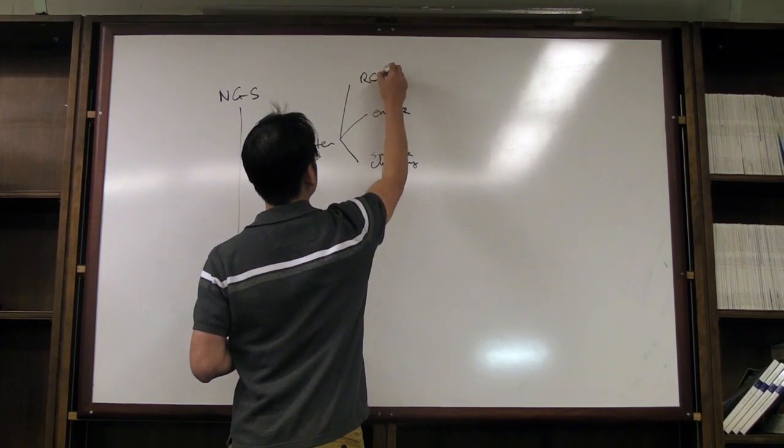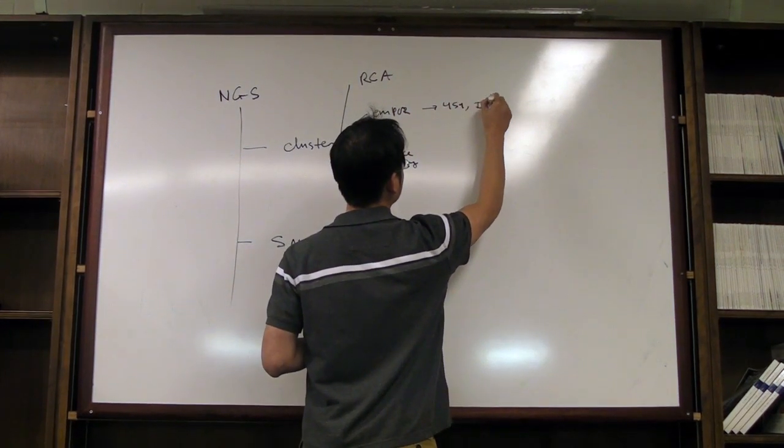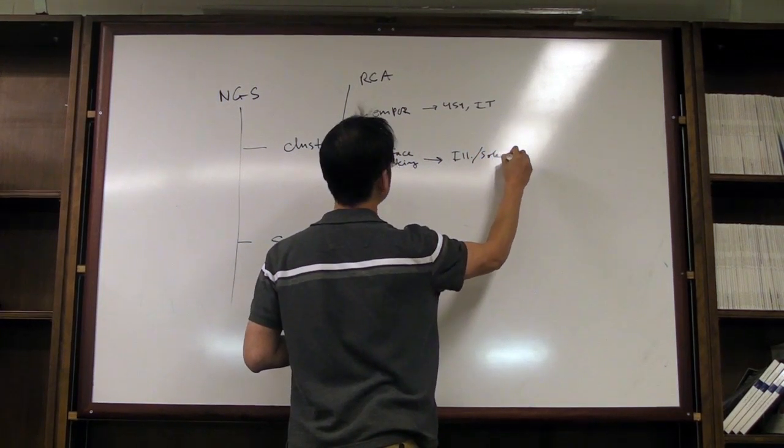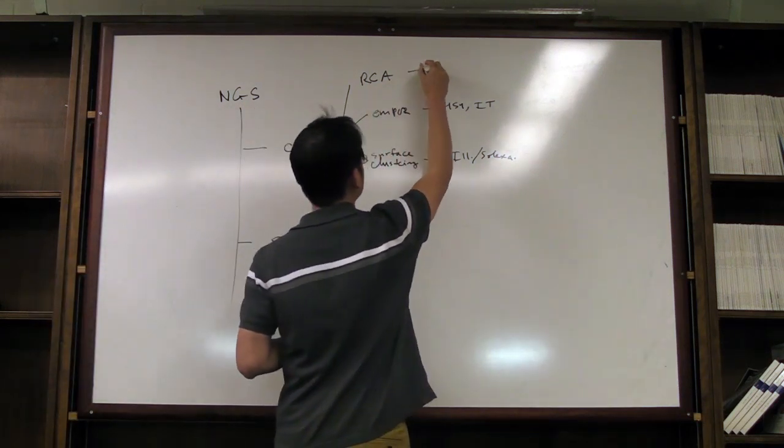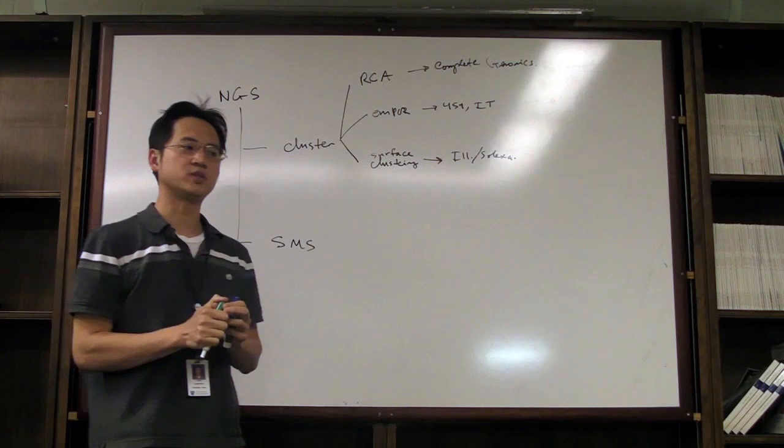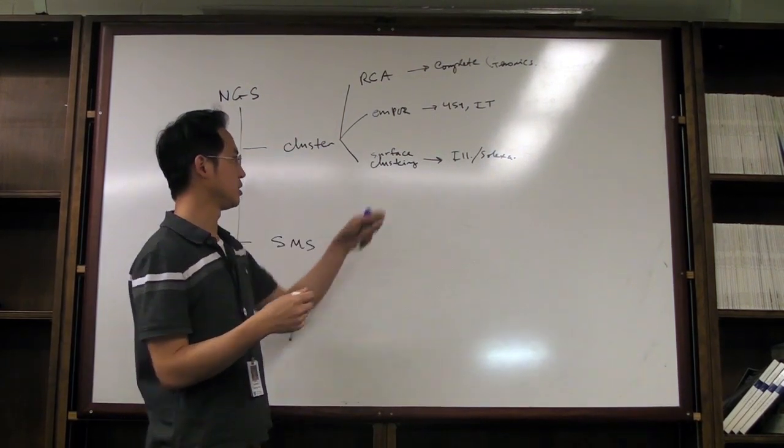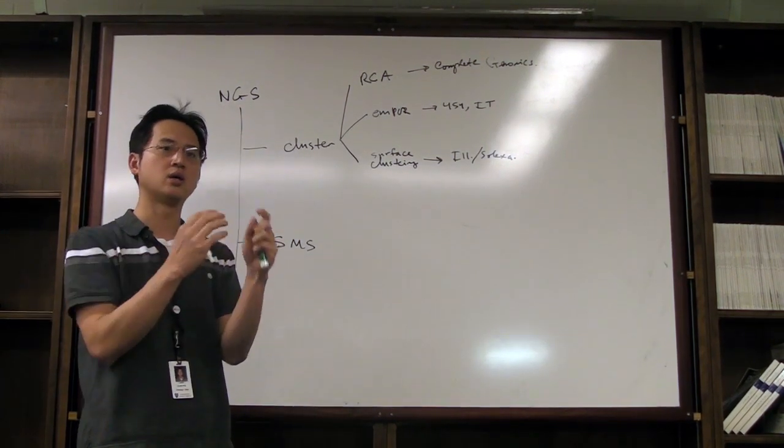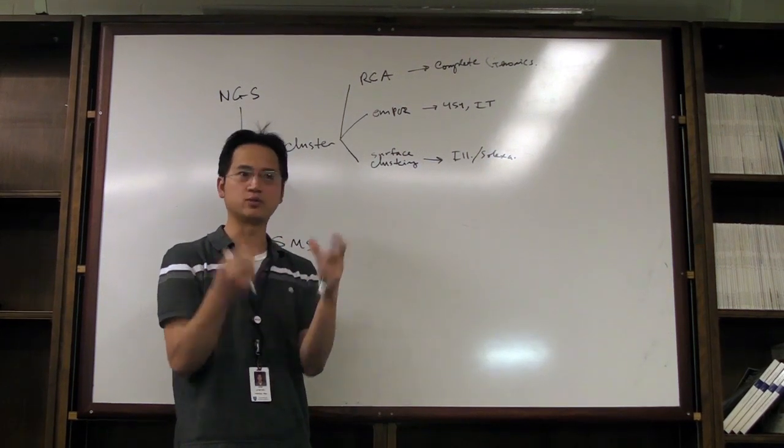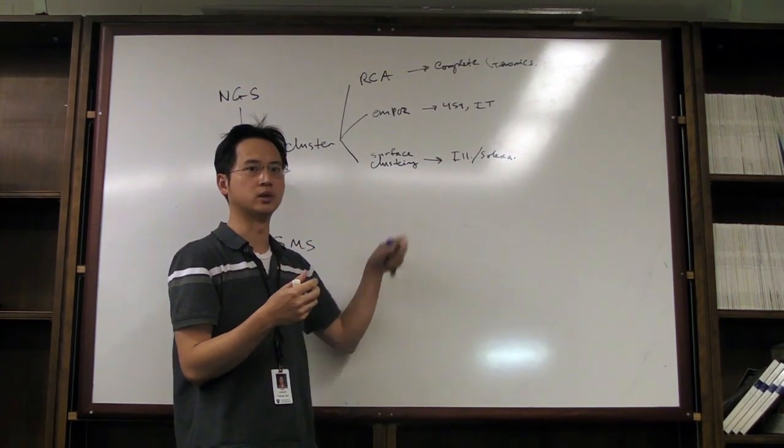Down the line there might be other methods, actually there's a third one based on rolling circle amplification. Emulsion PCR belongs to 454 and Ion Torrent. Surface-based chemistry in terms of clustering is Illumina or Solexa. This one I didn't really talk about, it's a company called Complete Genomics. The reason why I didn't talk about it is they are a sort of service company, they don't sell any instruments. Their method is very similar to Illumina, but instead of using a glass slide or chip, they make a circle and do rolling circle amplification.